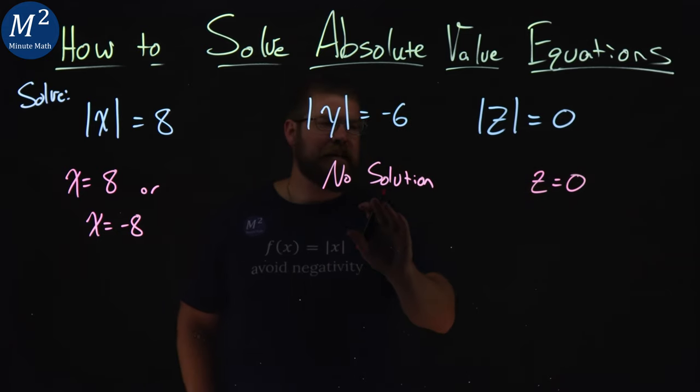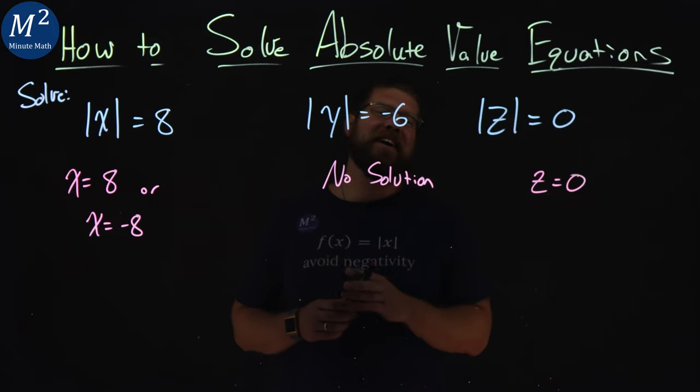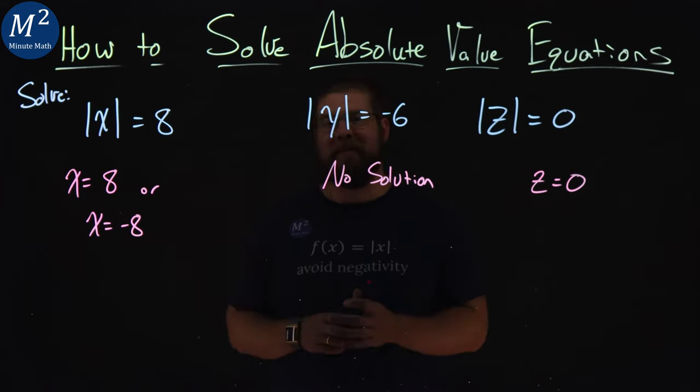So hopefully these three basic cases show you the gamut of basic absolute value equations, and you understood what was going on.